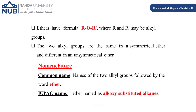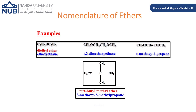For IUPAC nomenclature, ethers are named as alkoxy-substituted alkanes. We choose the alkane chain, and the substituent is numbered and written as an alkoxy group. For example, C₂H₅-O-C₂H₅ is named diethyl ether by common name, or ethoxyethane by IUPAC.